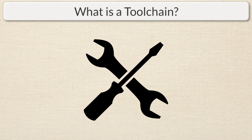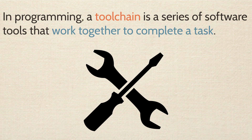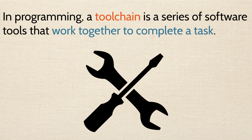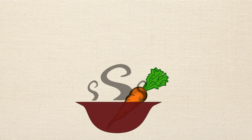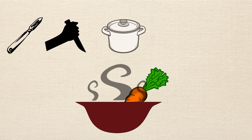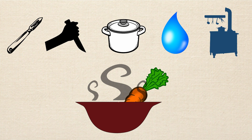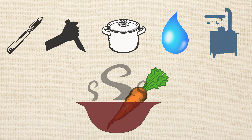So what is a toolchain in the first place? In programming, a toolchain is just a series of programming tools that work together in order to complete a task. If we were cooking something like carrot soup, a toolchain might include a carrot peeler, a produce knife, a pot, some water, and a stove. Together, these tools help you make carrot soup, which is the output we are looking for.